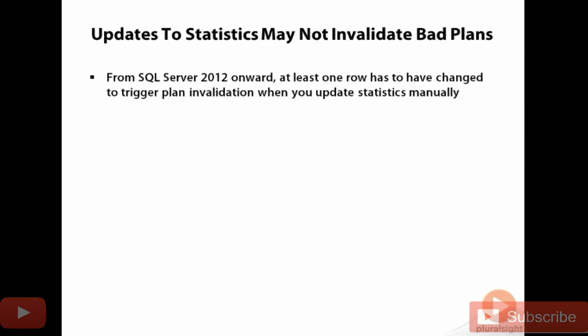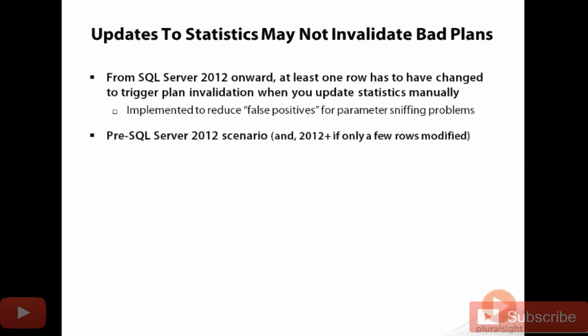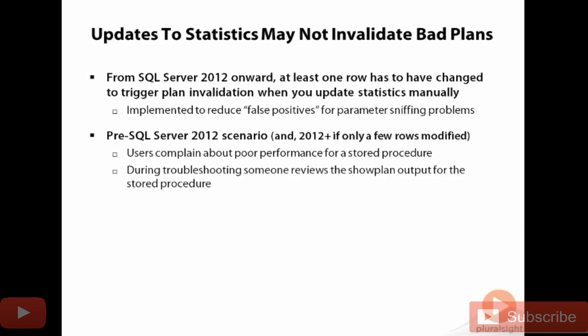That seems a little bit strange, but there was a reason for this — it's to reduce false positives that some people get when they think the problem is statistics. Prior to 2012, users could still complain about poor performance for a stored procedure, and somebody during troubleshooting looks at the show plan and sees that the estimated number of rows is way off from the actual number of rows.